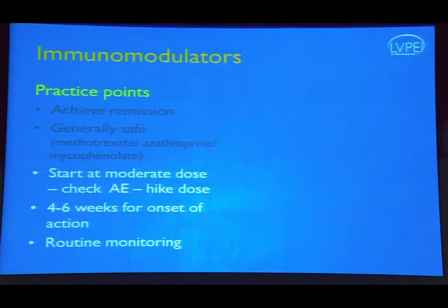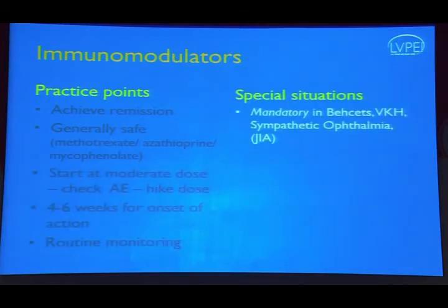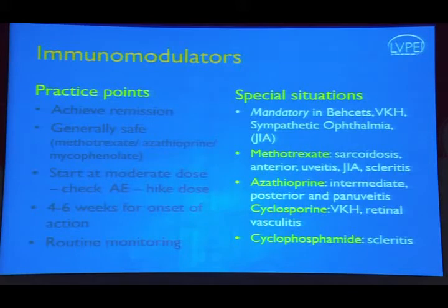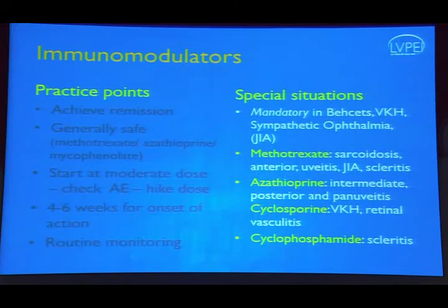Immunosuppressives are mandatory in Behcet's disease, VKH, sympathetic ophthalmia, and juvenile idiopathic arthritis. Methotrexate is preferred in sarcoidosis, anterior uveitis, JIA, and scleritis. Azathioprine is preferred in intermediate and posterior uveitis and pan-uveitis such as VKH. Cyclosporine is useful in recalcitrant VKH and retinal vasculitis. Cyclophosphamide is used less frequently but is very useful in scleritis despite a relatively poor safety profile.